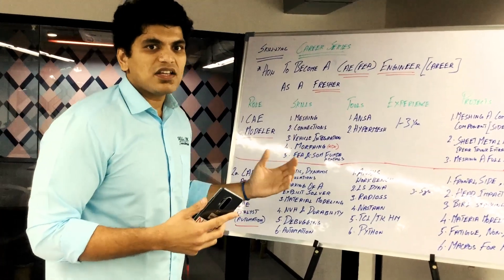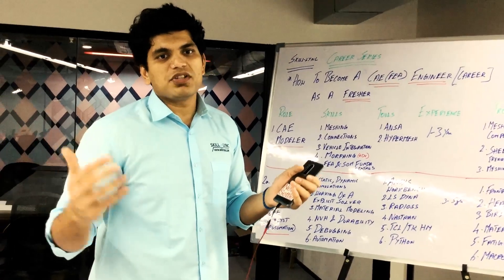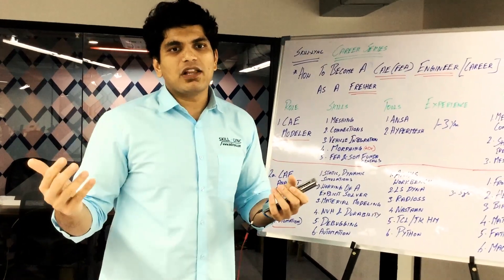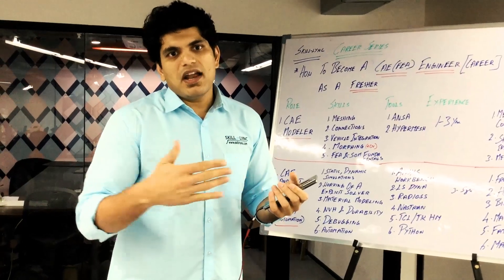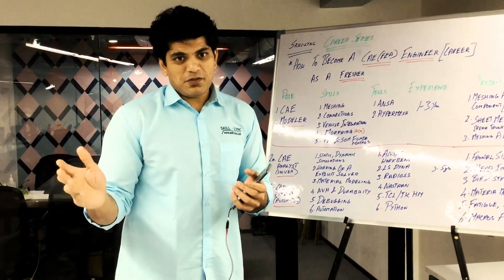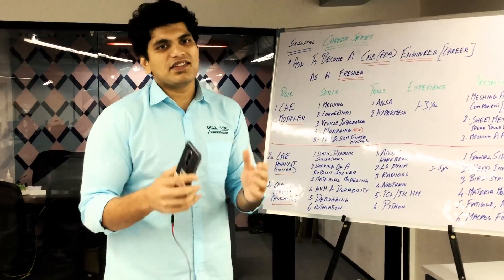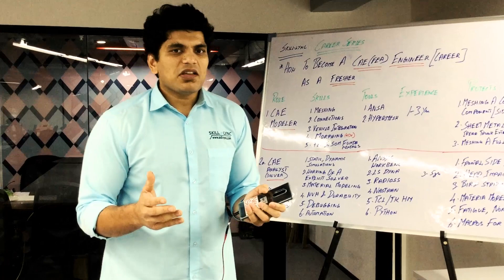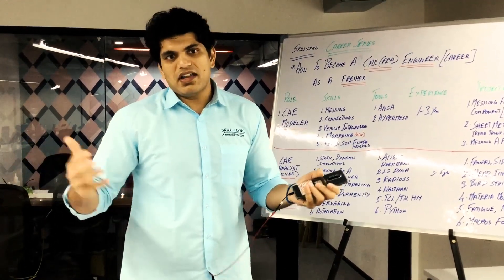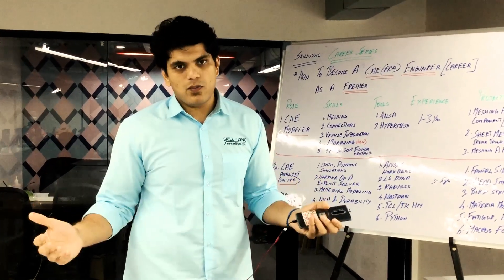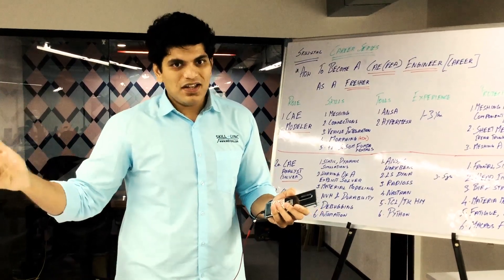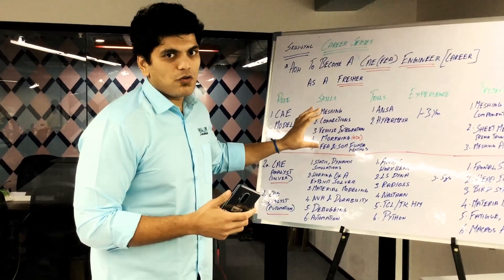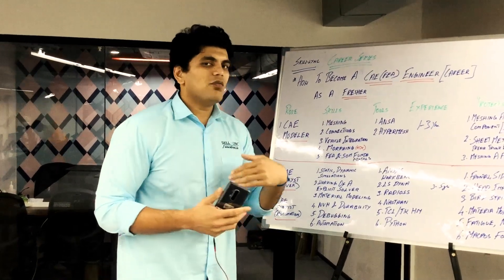Once a component is meshed, the modeler connects it to adjacent components. For example, if you mesh a car door, a colleague might have meshed the body-in-white of the car, and you then need to connect the two — that's what connections are. After components are connected, there is vehicle integration, where you integrate all the different meshed and connected components of the full vehicle and send it to the solving team. So meshing, connections, and vehicle integration — along with morphing, which is a bit more advanced — are the three things that make you a CAE modeler.